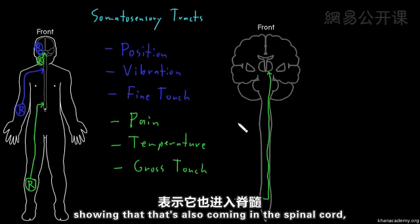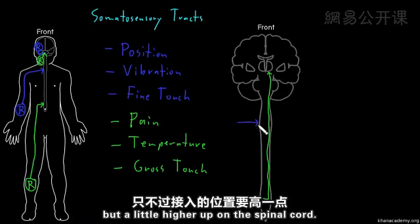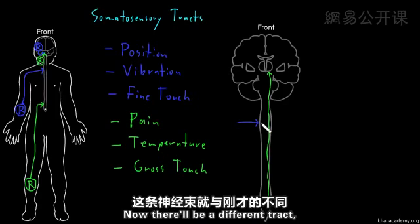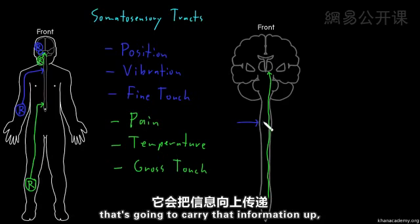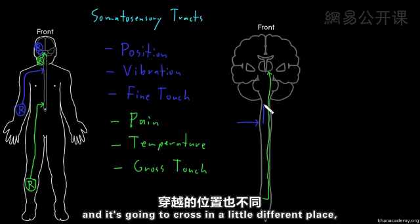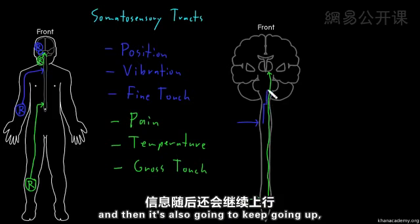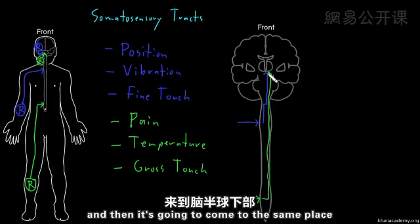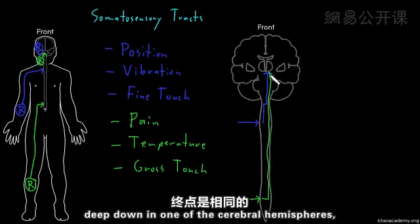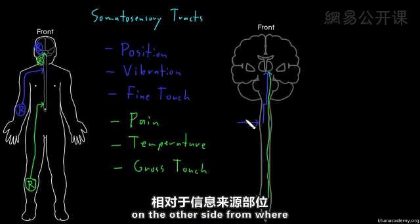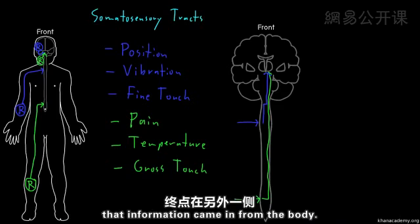A different tract will carry position, vibration, and fine touch information up, crossing at a slightly different place — a little higher up in the brainstem — and then continuing up to arrive at the same deep location in one of the cerebral hemispheres on the other side from where that information came in from the body.